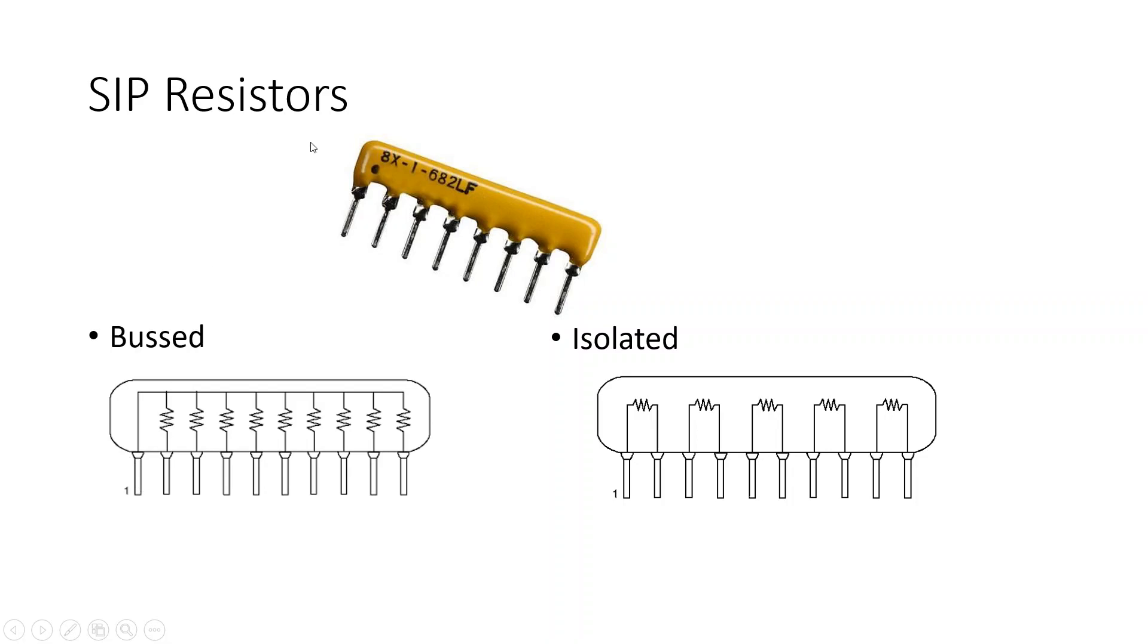This pin is usually noted by marking like a dot or some other type of strip. The isolated has each individual resistor connected to the adjacent pin. As you can see here in pin one, this resistor is only connected here. None of the other pins are connected to that single resistor. So, each resistor is isolated.